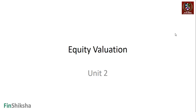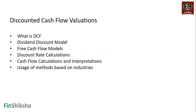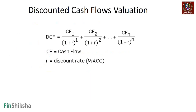We continue with our discussion on equity valuation unit 2, looking at specifics around cash flow calculations, interpretations, and the usage of methods — FCFE versus FCFF — based on what industries or companies we are looking at. In this segment we are going to look at how we arrive at cash flow calculations. DCF is going to be the present value of all these cash flows discounted at a certain discount rate, which we have already recapped.